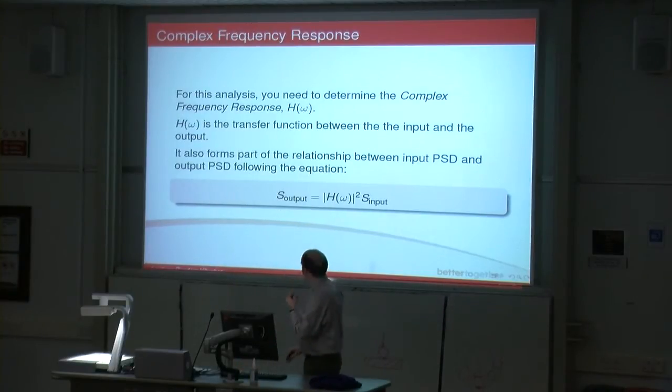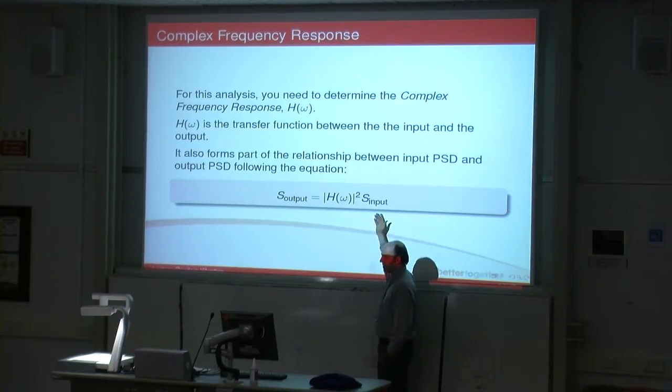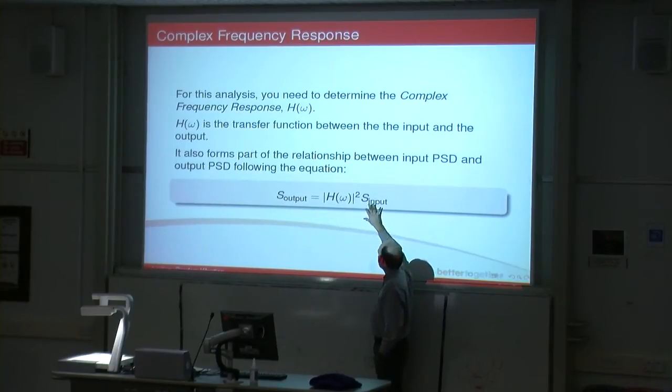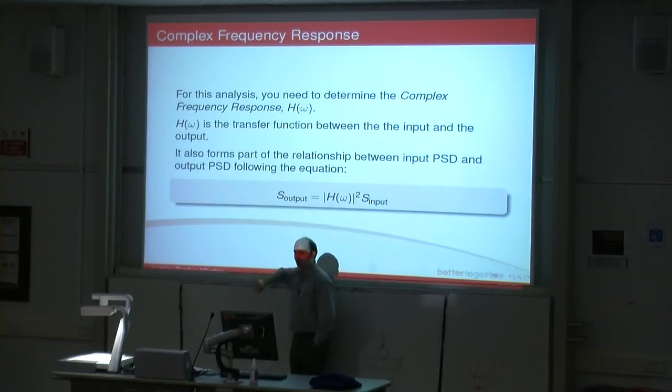How do we work out what the output spectral density is? We need to know this thing called a complex frequency response function, H omega. H omega is essentially the transfer function relating the input and the output together. It forms part of this relationship. You've got your spectral density of your input, this is what's being vibrated. Say you've got a vehicle that's rolling over a road, and the road surface has a certain vibrational input represented by a power spectral density. You multiply it by the modulus of your complex frequency response function squared, and you get your power spectral density of the output.